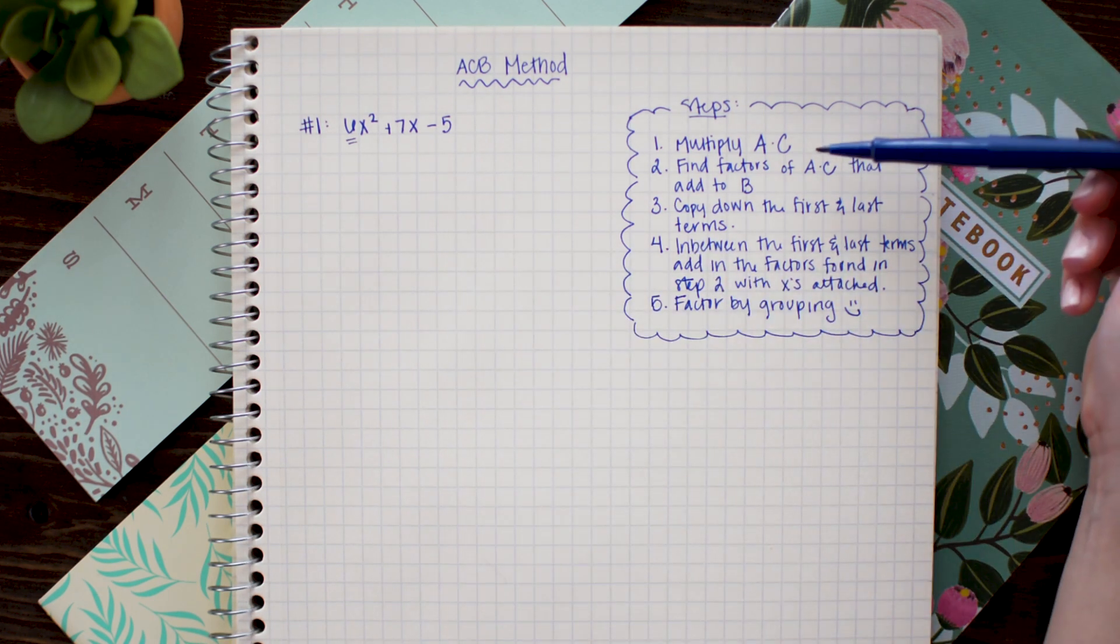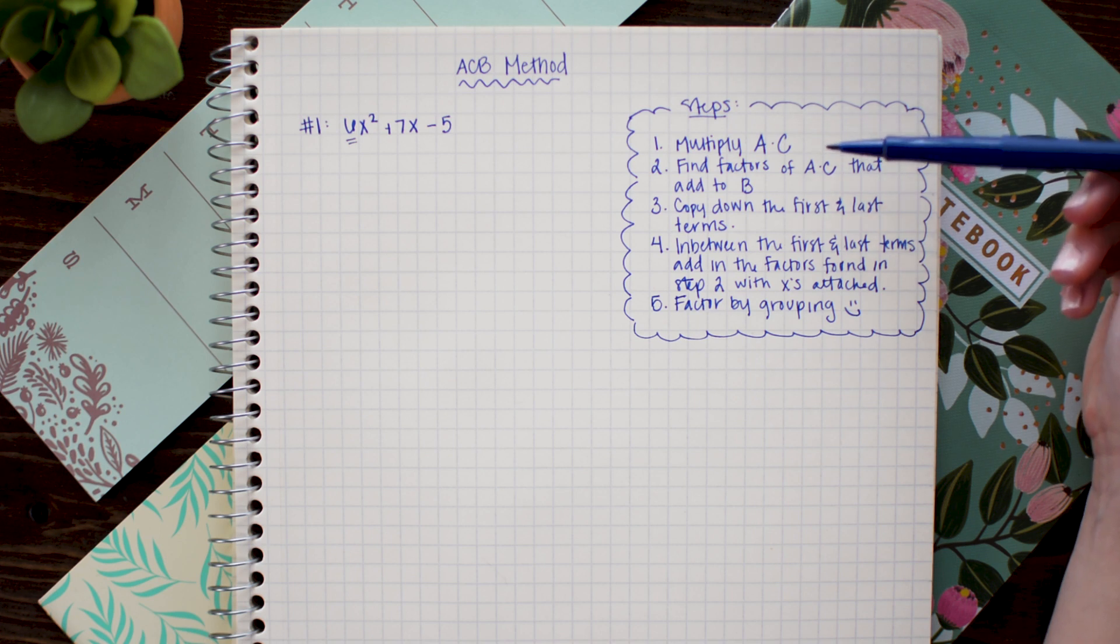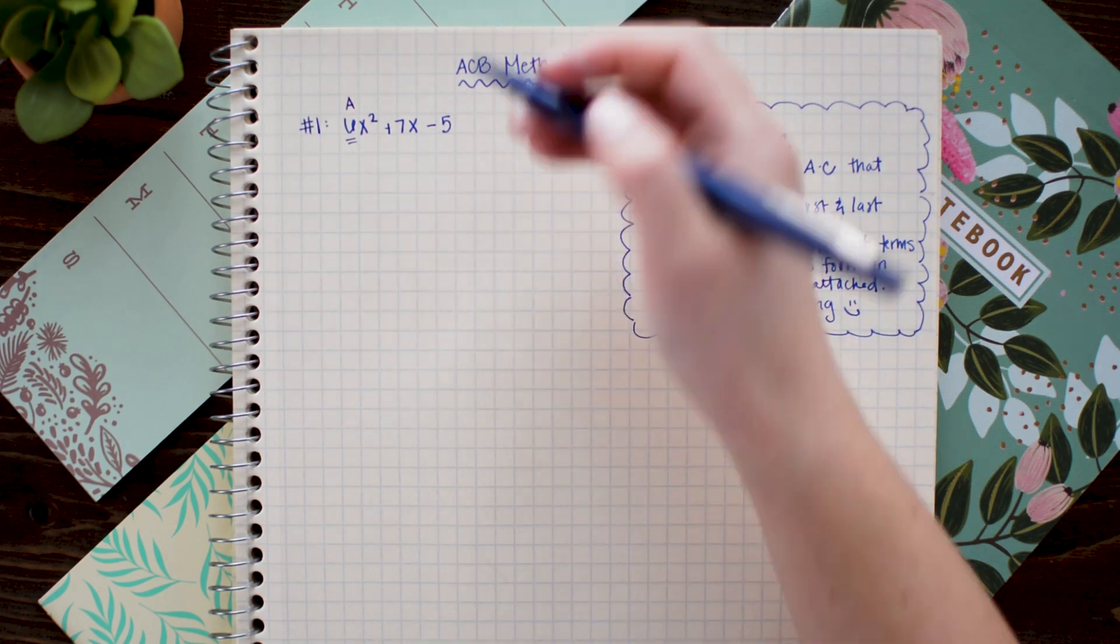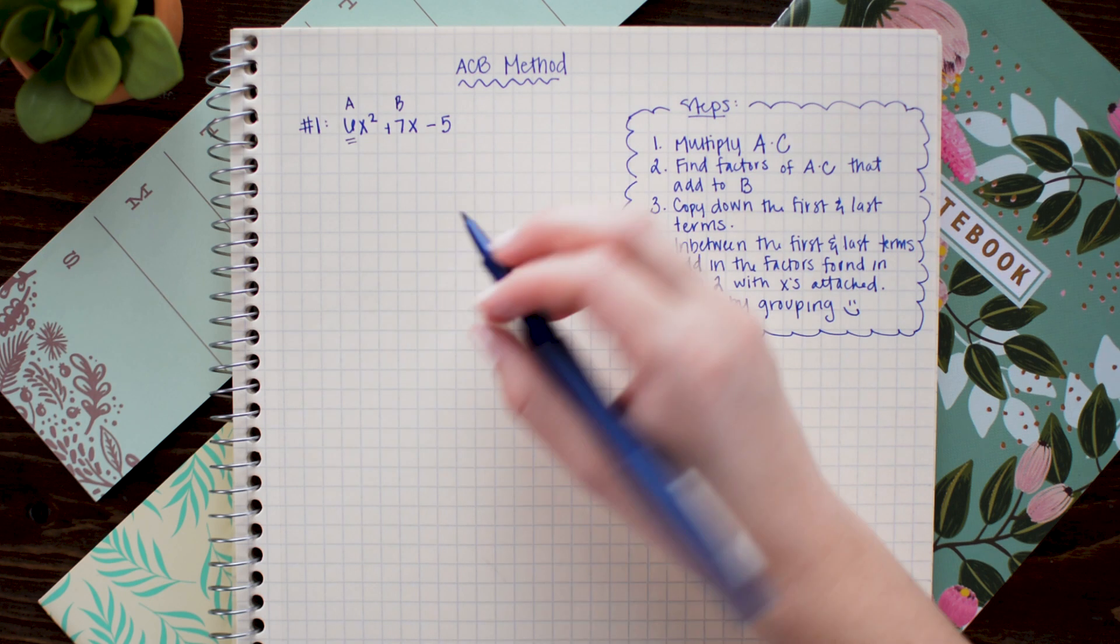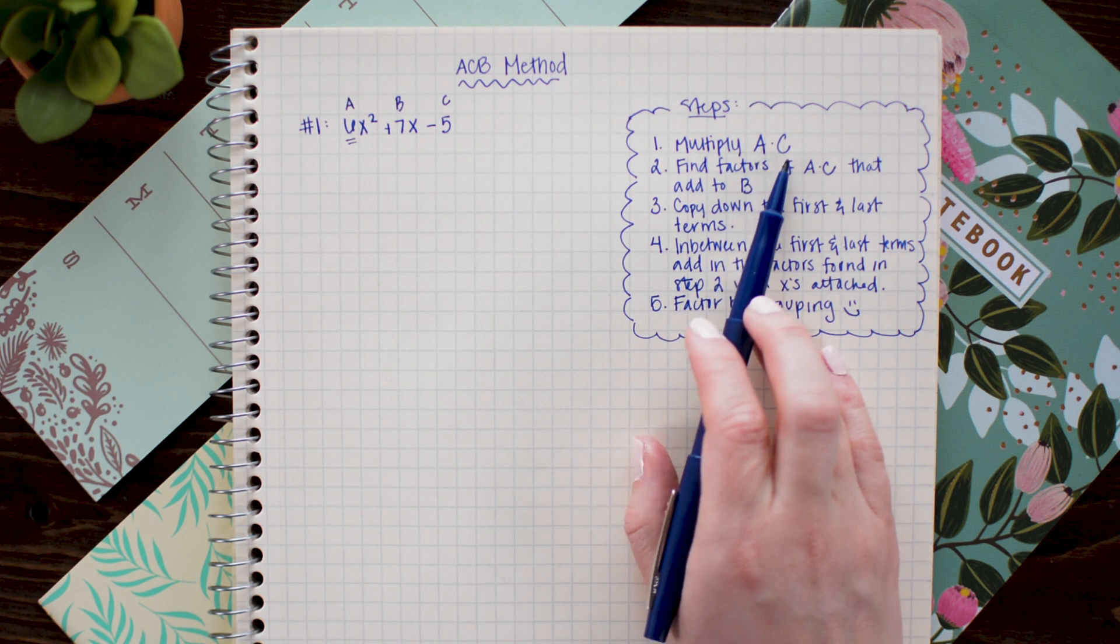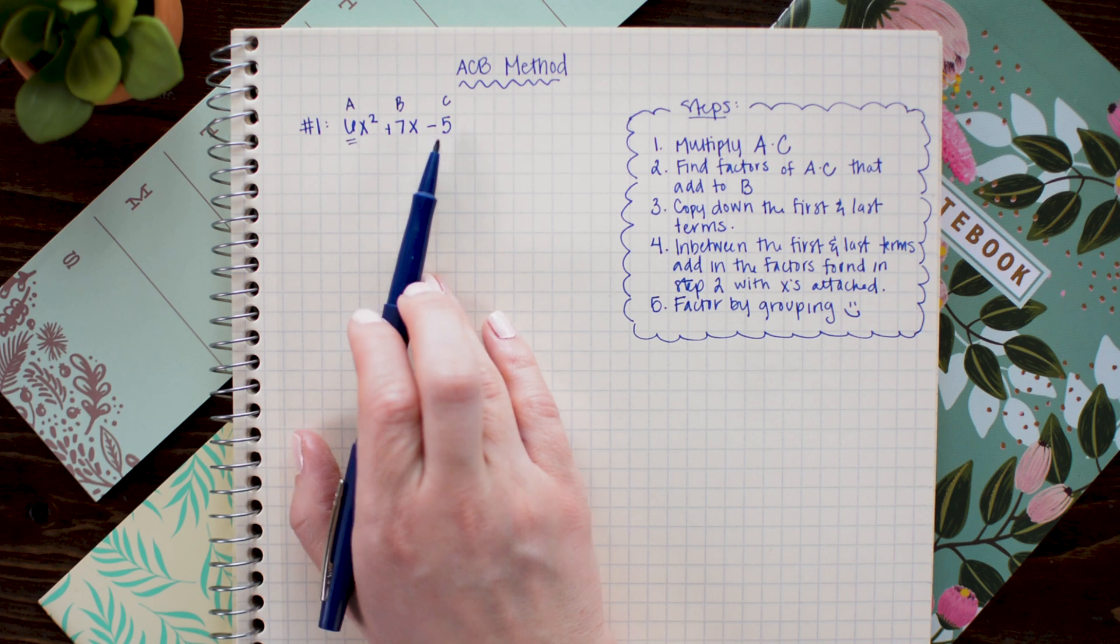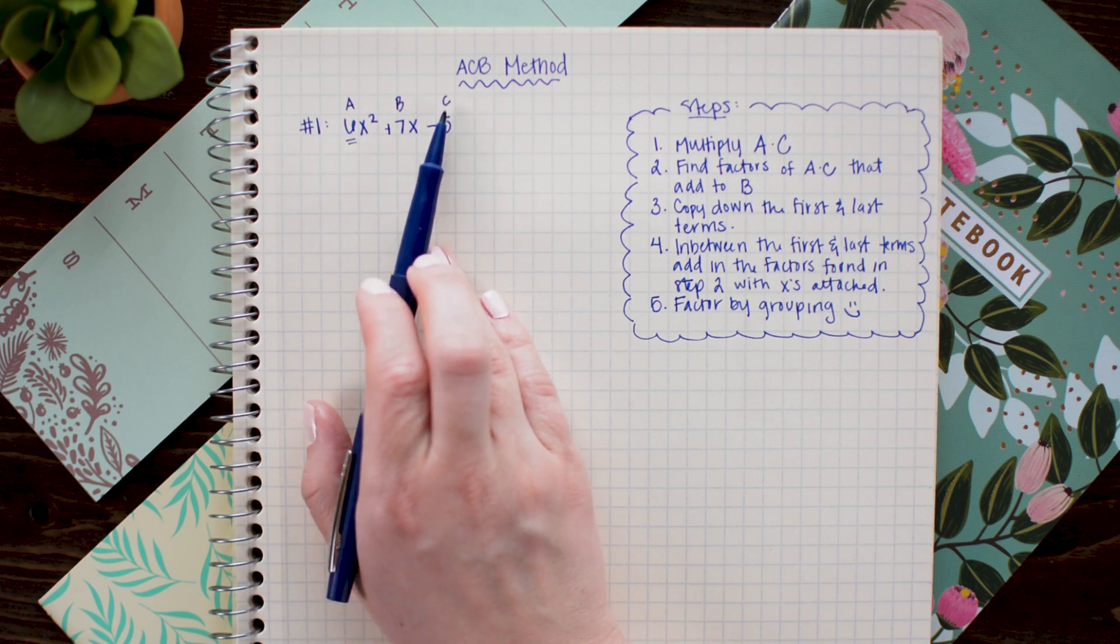And in those steps the first thing we do is we are going to multiply the a and c values together. Now remember in quadratics the a term is the value on the x squared, the b is the coefficient on x, and the c is the constant. So what we want to do to get started is to multiply a and c together. So for this first problem I'm going to multiply 6 and negative 5 together. So if you have a minus sign here make sure to take it with you as part of c.